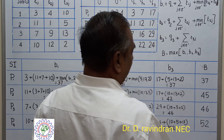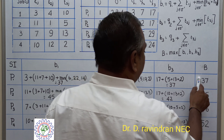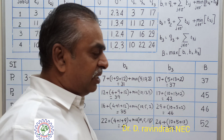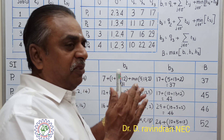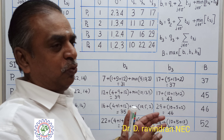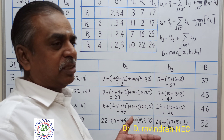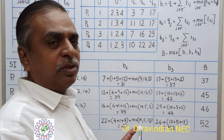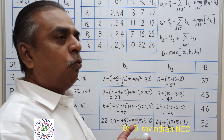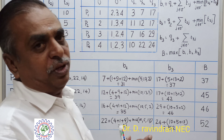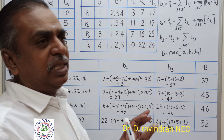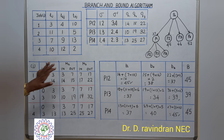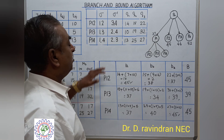From this first stage we conclude that job one is best processed initially, as it yields the minimum lower bound. In the next stage we decide which job should follow job one. There are three possibilities: 1→2, 1→3, or 1→4. Among these three sequences, we determine which is better.